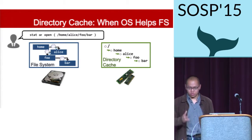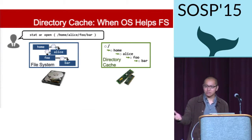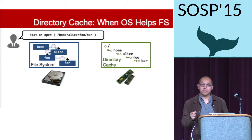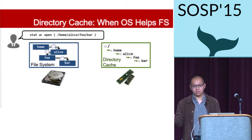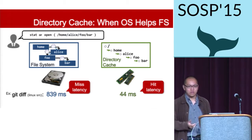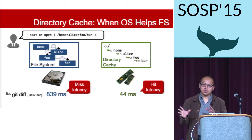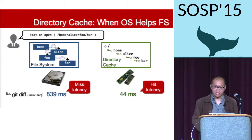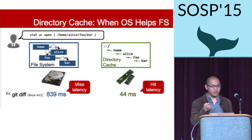Today we're going to talk about directory cache, which is an optimization provided by many operating systems — for example, Linux, Solaris, BSD, or even Mac OS. What directory cache does is speed up the lookup operation inside your file system by caching path information in memory. To illustrate how fast it is: if you do git diff on a Linux repository and the directory cache always takes cache misses, it takes about 839 milliseconds. But with only cache hits, it takes just 44 milliseconds — a lot faster.